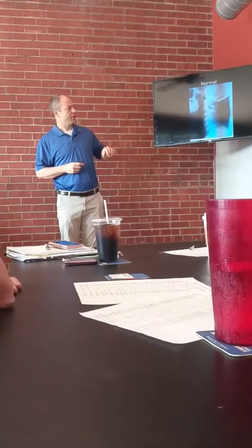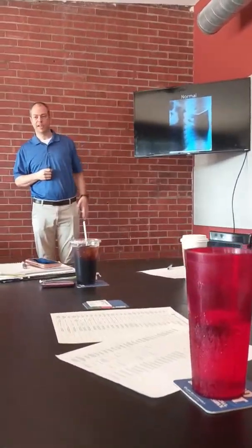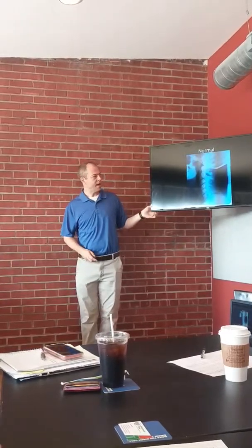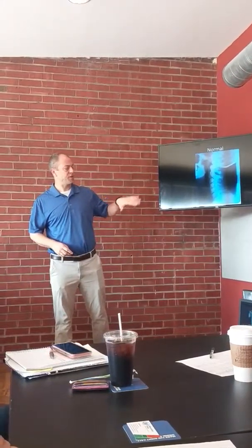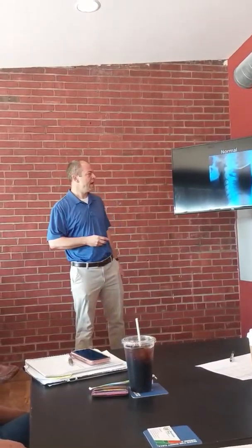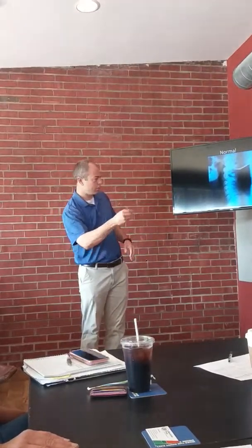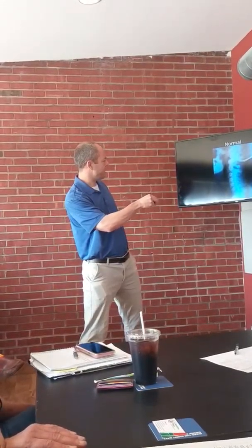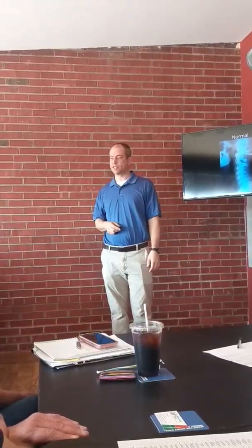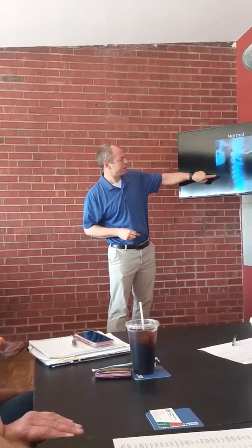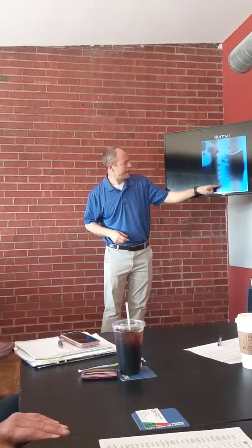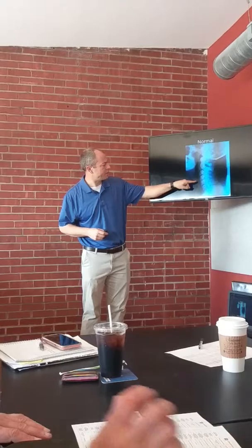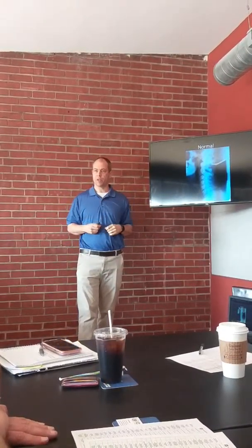In my office there are a lot of different X-ray views that I look at. Today, to keep it simple, this is the only view we're going to look at — a side view of a person's neck. This is what a normal spine would look like. You want to see that curve in the side view of the neck. This is the jaw, the front of the spine, the back, the skull, and the shoulder. An important thing about a normal side view is that the disc spaces between the vertebrae are all the same height.